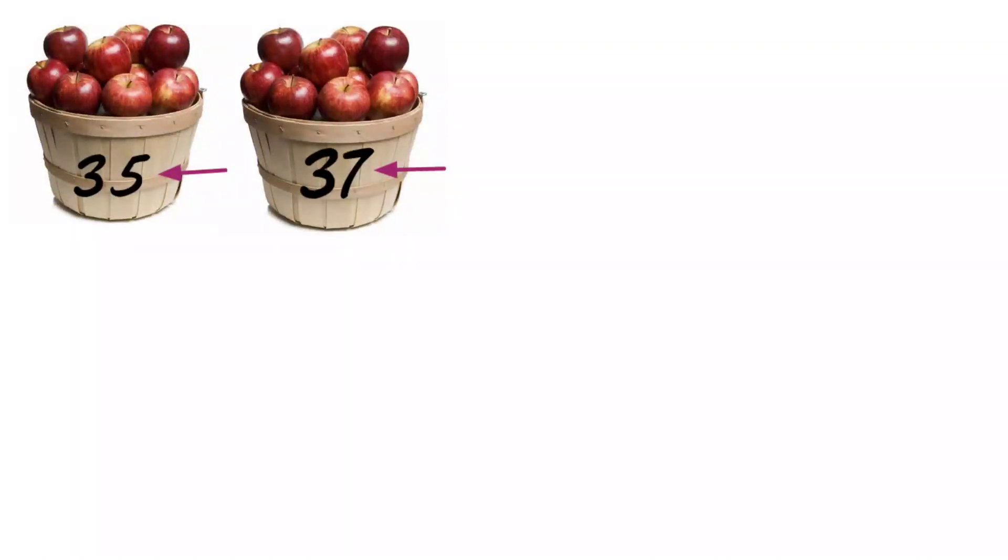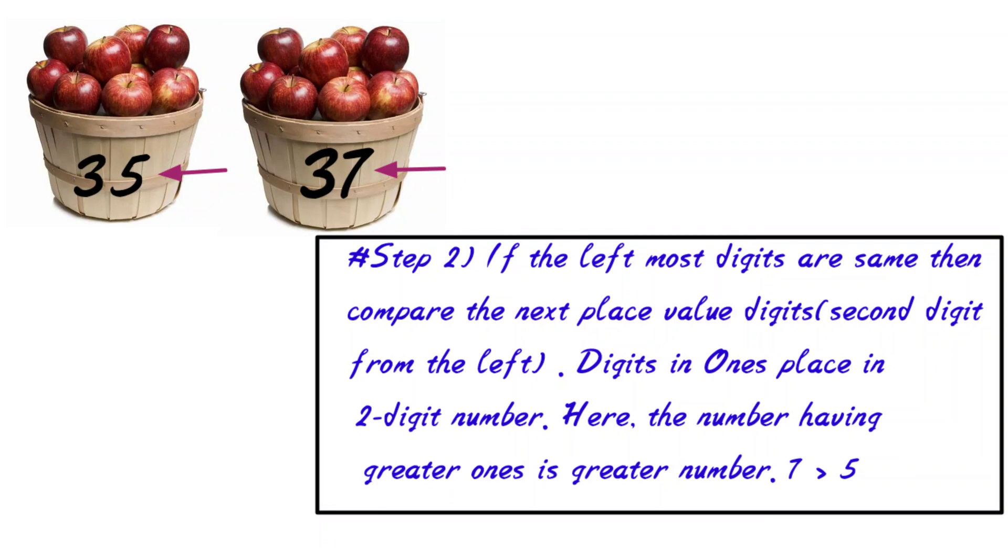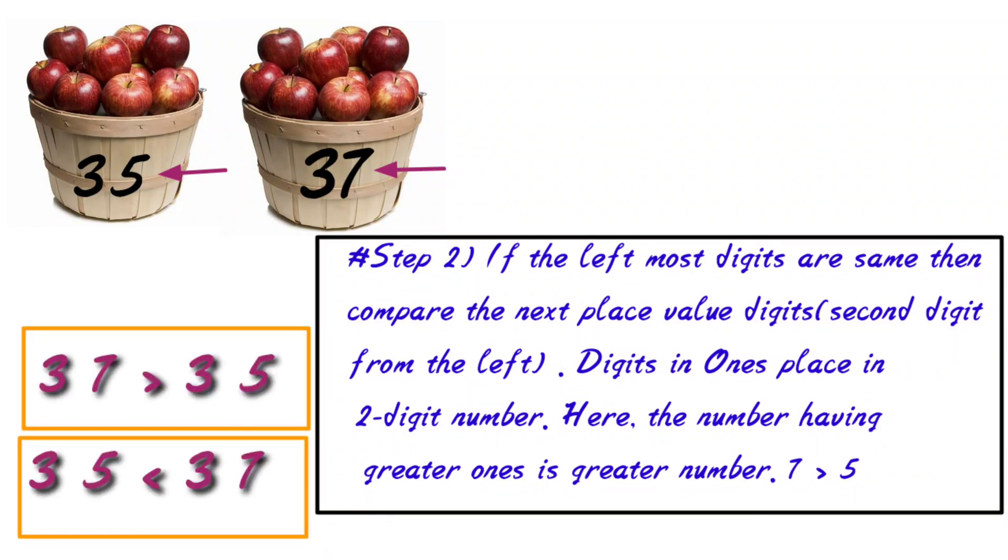Next step two, if the left most digits are same then compare the next place value digit, that is the second digit from the left, and here 7 is greater so 37 is greater than 35, or you can say 35 is less than 37.